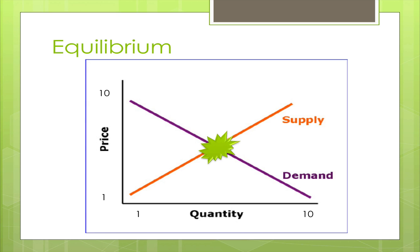These two graphs will intersect with each other in a typical supply and demand graph. That point where the two lines intersect is what we call equilibrium — you can see the Latin root 'equa,' meaning equal, in there. This is the point on the graph where the demand placed on a product based on what people want to buy at a certain price is correctly aligned with what producers are actually supplying. If we go beyond equilibrium on any one part of the graph, then somebody isn't getting the best deal.